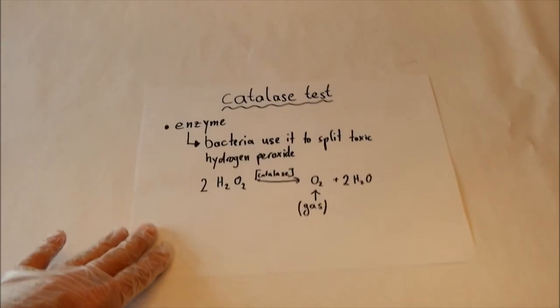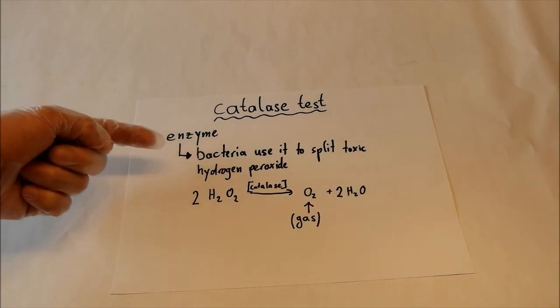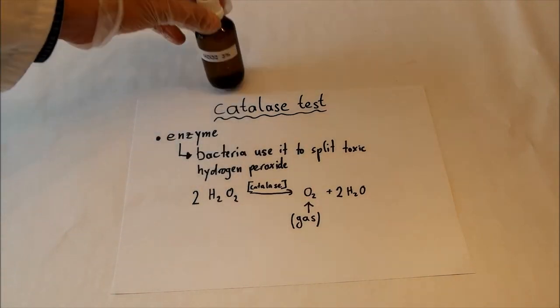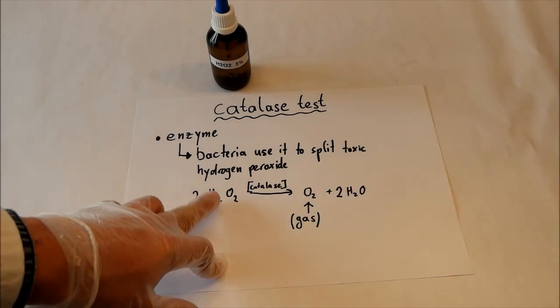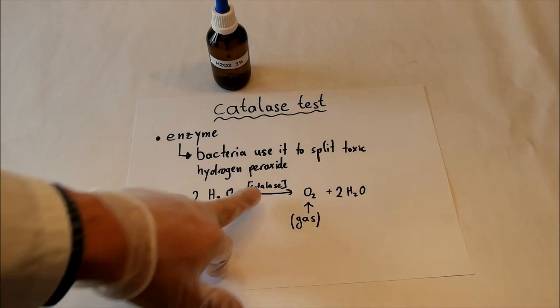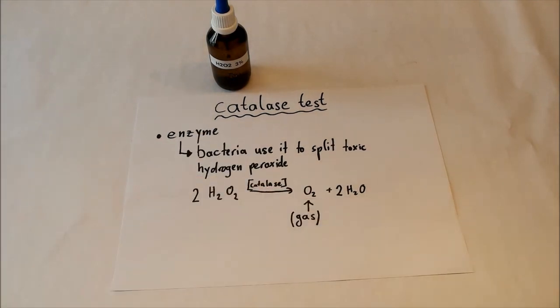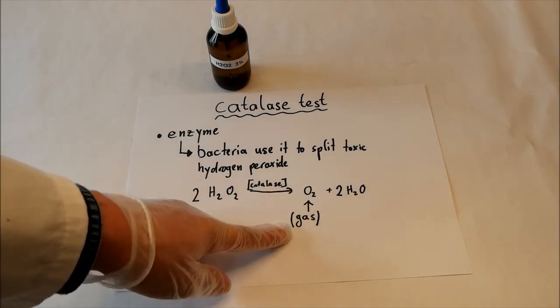We will start with the catalase test. First I'll show you the theory behind it before we try it. So catalase is an enzyme produced by bacteria to split the toxic hydrogen peroxide, which is produced in their metabolism. So we got hydrogen peroxide, and catalase splits it into oxygen and water. And this oxygen is a gas.